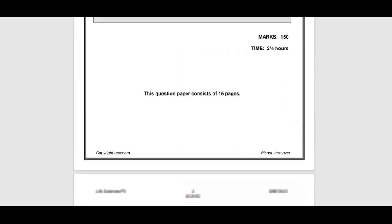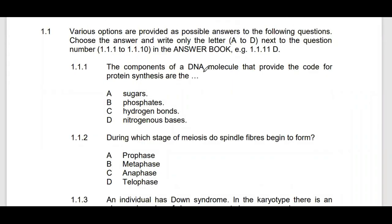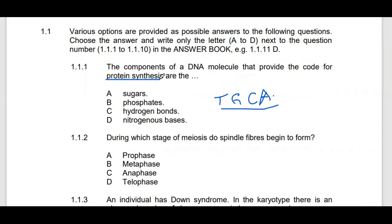Let's start with Section A. The component of a DNA molecule that provides the code for protein synthesis — which component of the DNA molecule provides the code for protein synthesis? The answer is the nitrogenous bases: thymine, guanine, cytosine, and adenine. These nitrogenous bases are organized together to form a gene, which brings about a protein. So the answer is D.